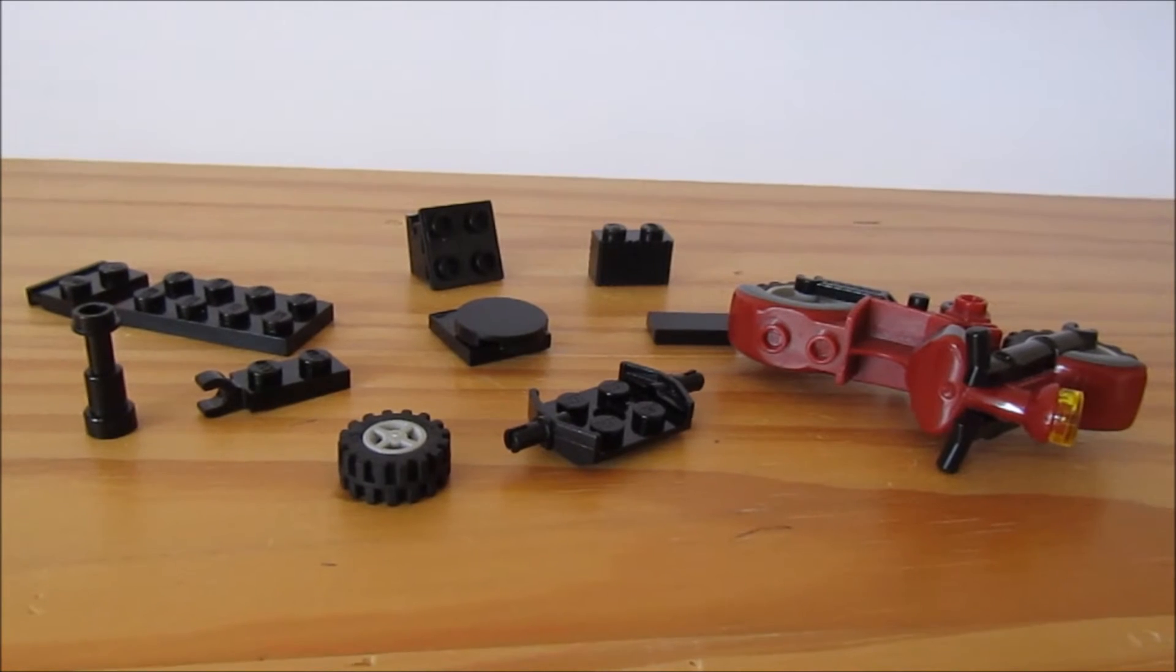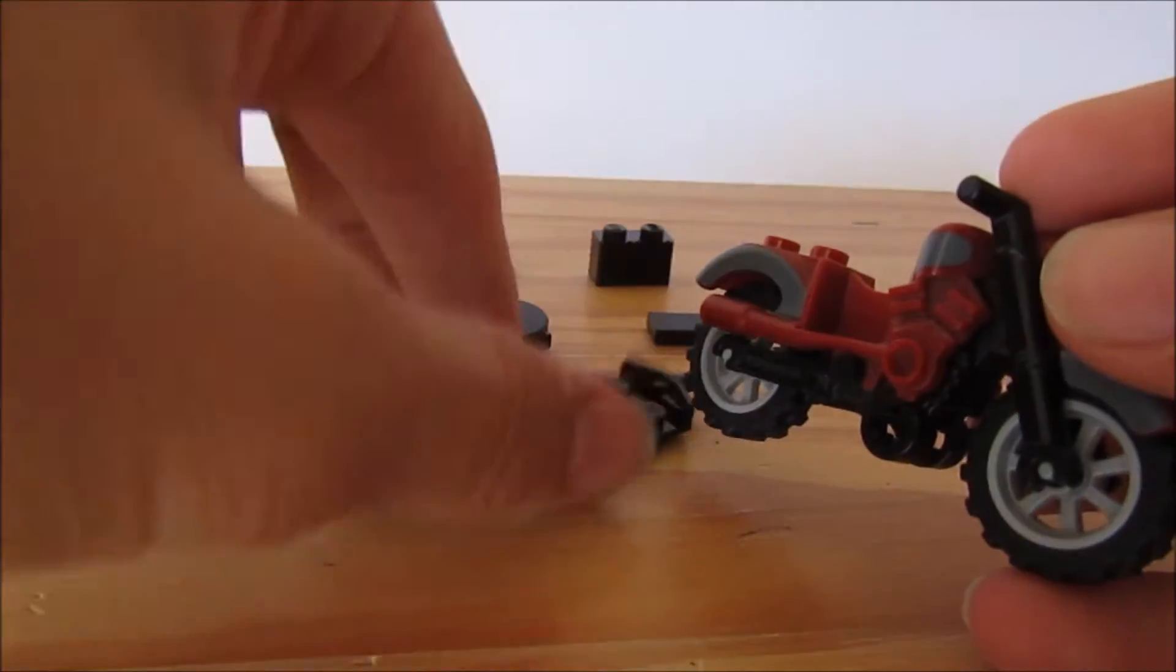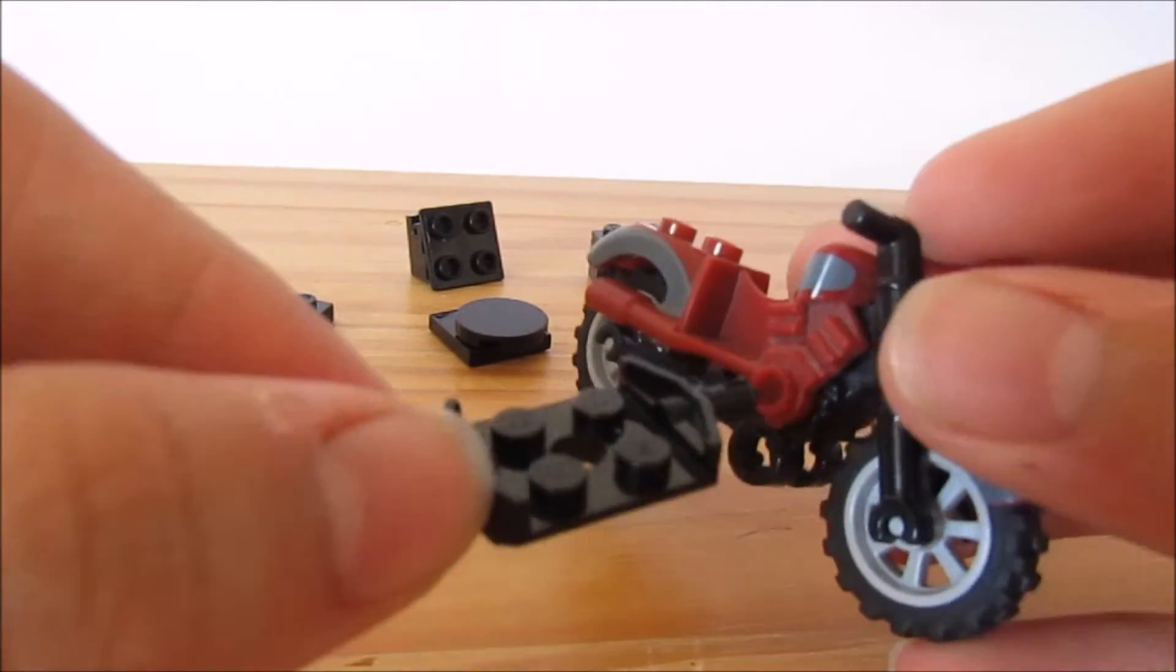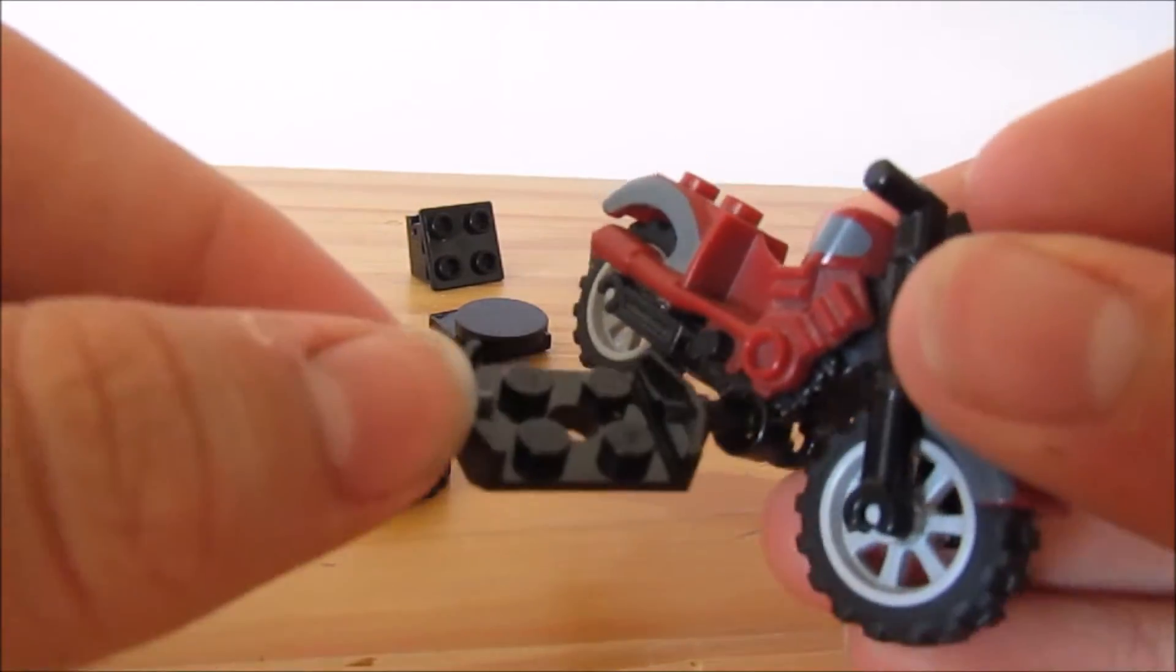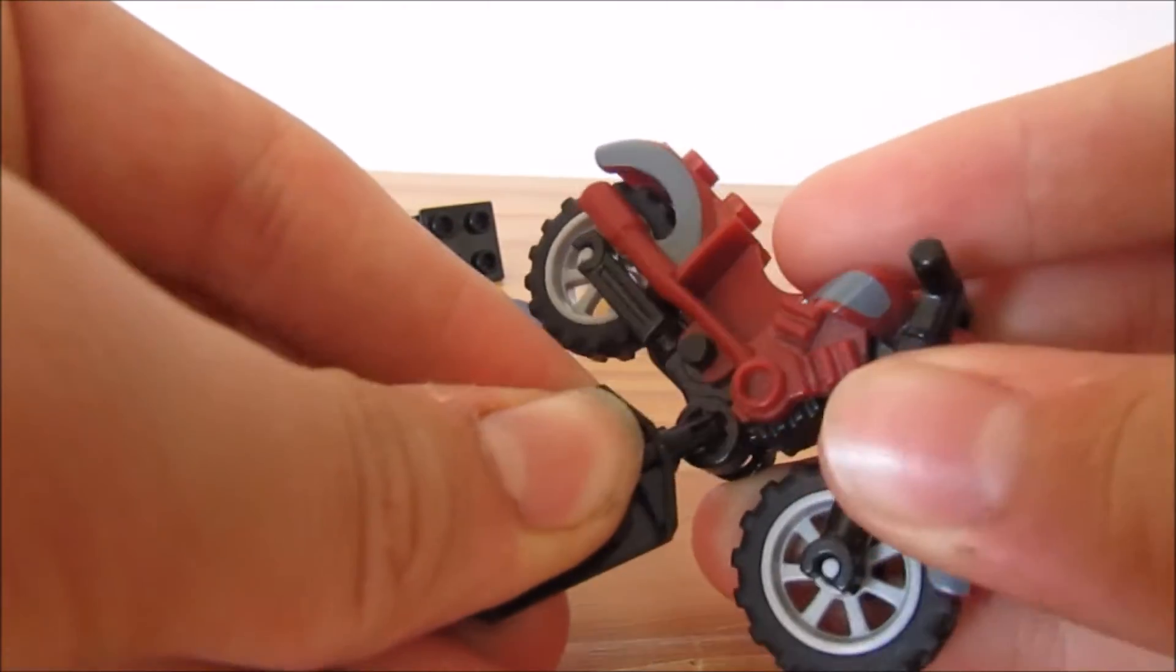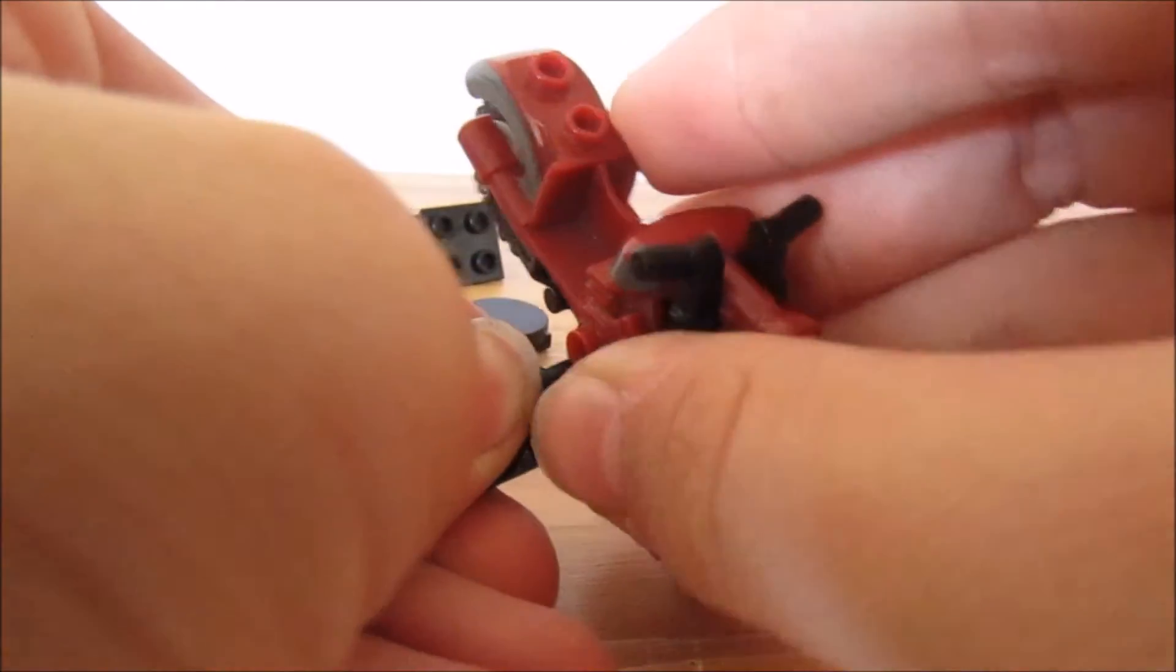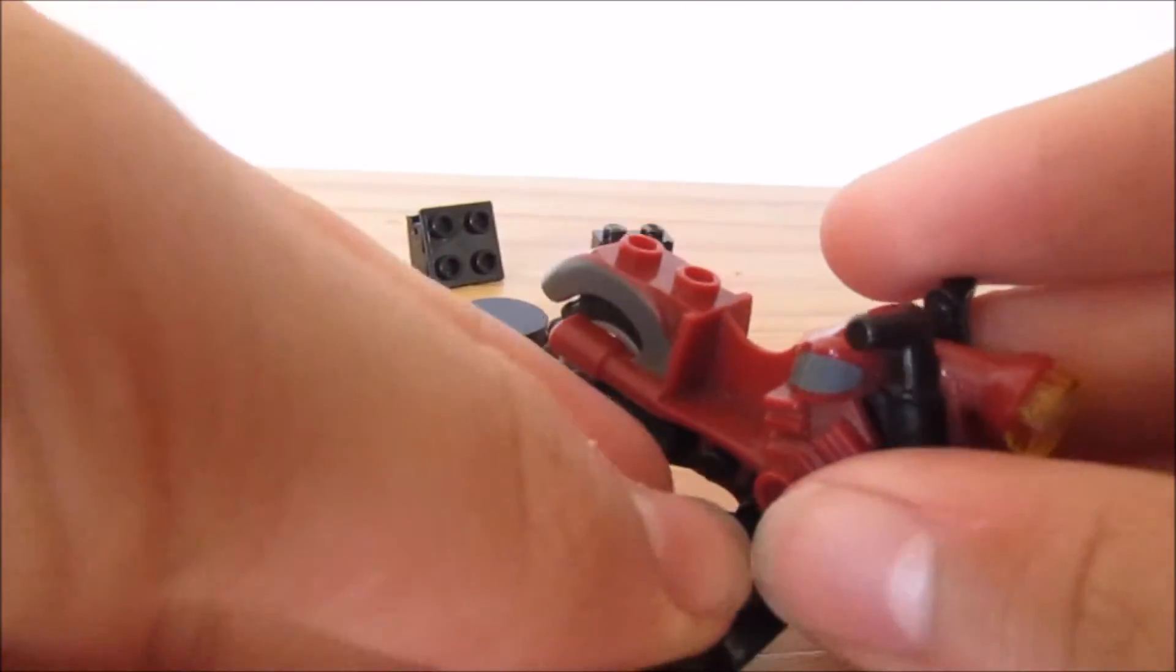With that out of the way, we can start building. First, we're going to grab our motorbike and attach this here. This is like a wheel thing - I'm going to put that in the little cross here like so. It's sort of hard to get in, but once it's in, it's pretty sturdy.